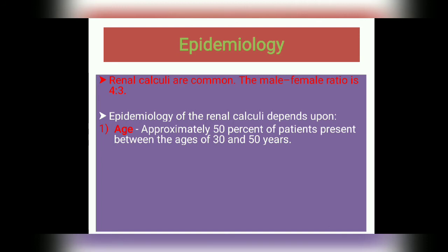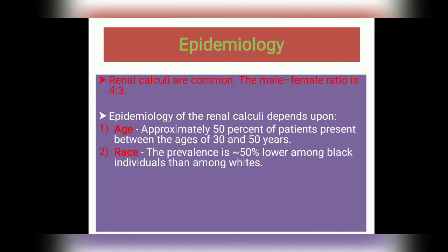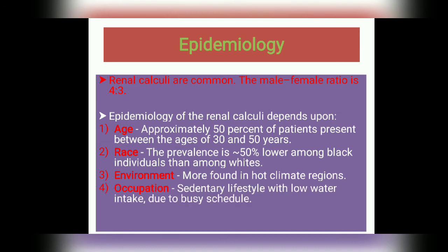Regarding age, approximately 50% of patients present between the ages of 30 and 50 years. It can also occur in children and old age depending on different conditions. Regarding race, prevalence is 50% lower among Black individuals than among White individuals. Regarding environment, more stones are found in hot climate regions like Rajasthan. Regarding occupation, a sedentary lifestyle with low water intake — such as in busy doctors or businessmen — increases the risk of renal calculi.